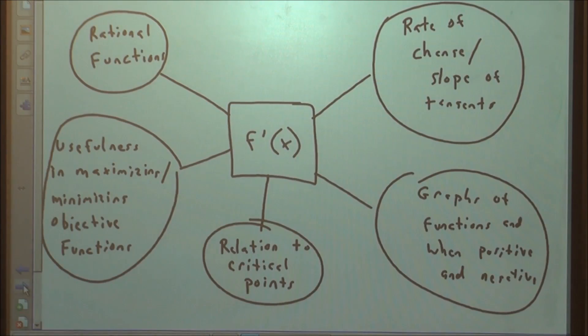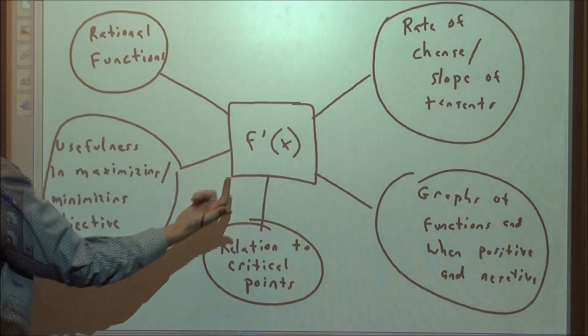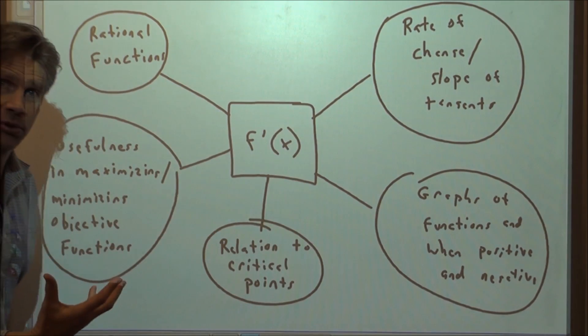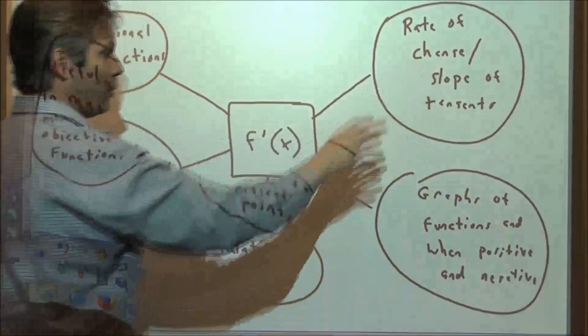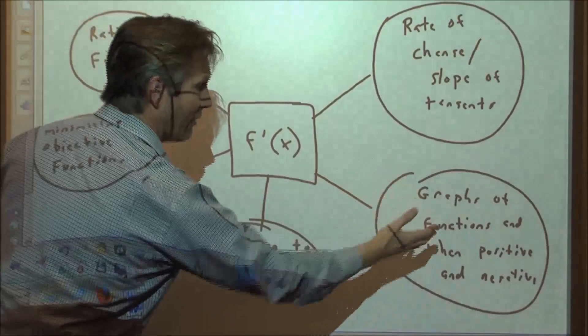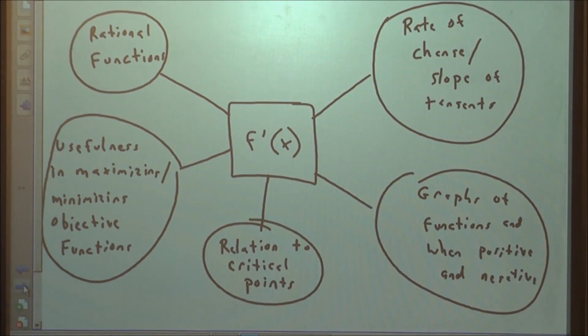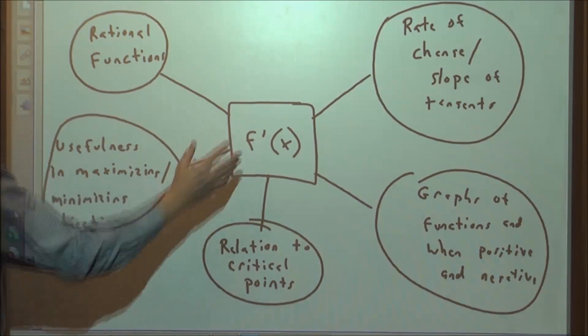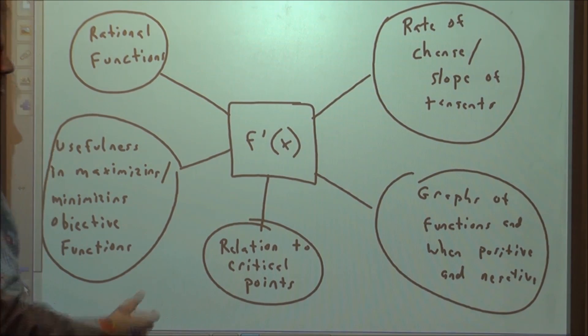So when it comes to first derivatives, there is a relationship between the rational functions that we were just talking about. There is a connection with rates of change and slopes of tangent lines, with graphs of functions and when they're positive, when they're negative, and what that might imply. The relationship that this has to critical points, and then the usefulness of using first derivatives when minimizing or maximizing a function.